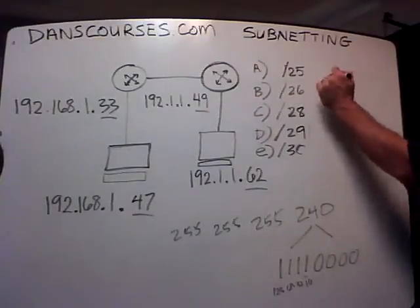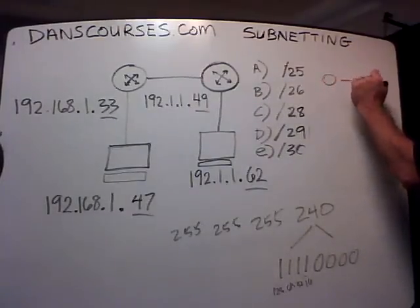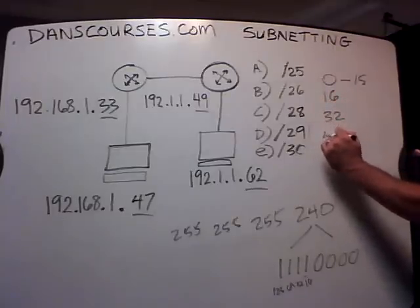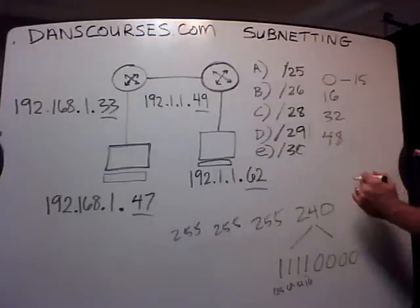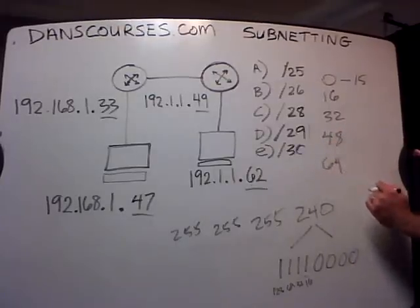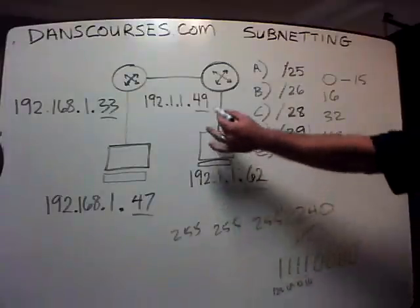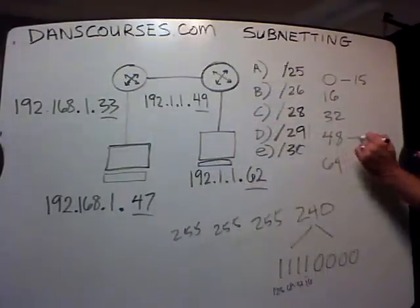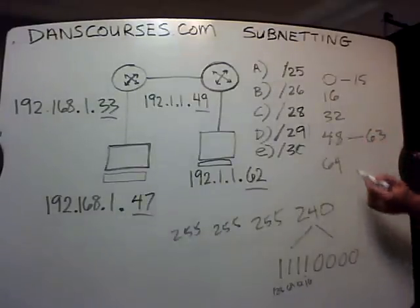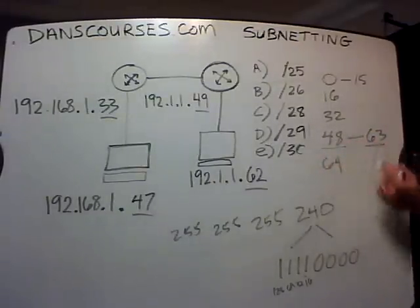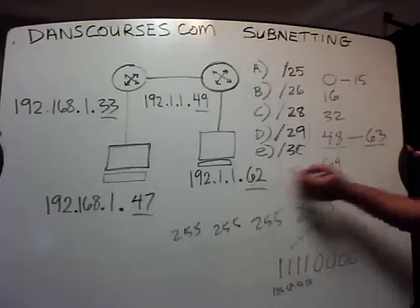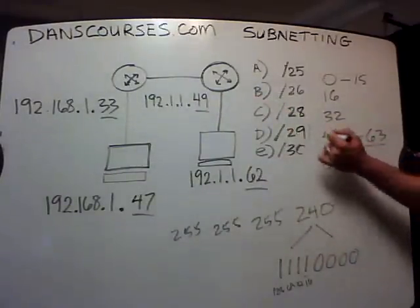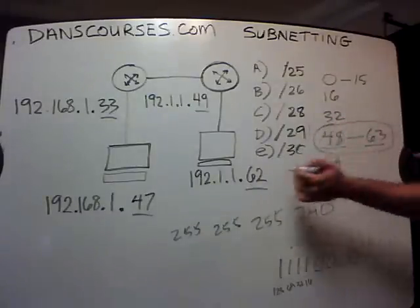The networks go: zero to 15, 16, 32, 48, 64. We've got 49 in this router and 62 for the host — 48 to 63. 48 is the network, 63 is the broadcast, 62 is the last usable host, and 49 is the first usable host in this subnet. That works.